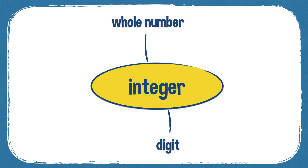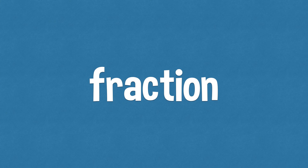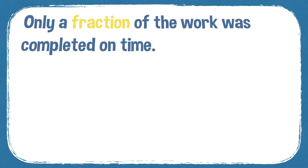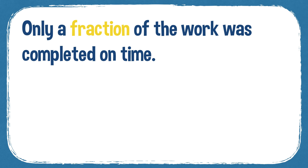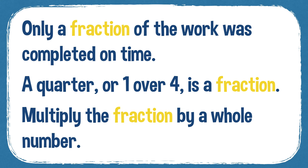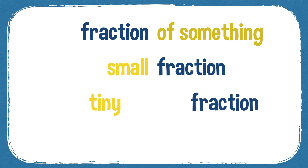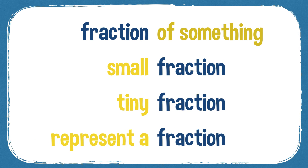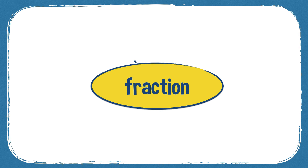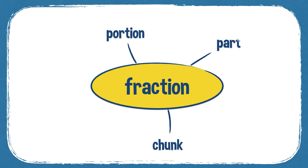When you don't have a whole number, when you don't have an integer, you often have a fraction. A fraction is part of a whole number, and it also suggests part of a thing — such as a fraction of a cake. For example, only a fraction of the work was completed on time. A quarter, or 1 over 4, is a fraction. Multiply the fraction by a whole number. You can have a small fraction, a tiny fraction, and you can represent a fraction with a picture. Synonyms: portion, chunk, part.